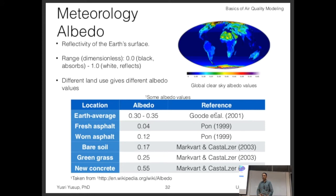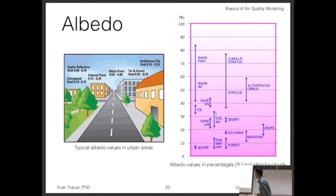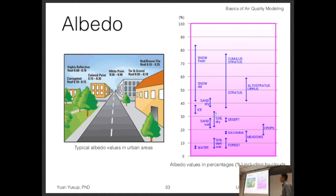Most of the time when you run air quality modeling, you run it in industrial or urban areas, so these values can be useful as a reference if you don't know the surface characteristics. Typical albedo values in urban areas include: highly reflective colored paint at 0.15 to 0.25, corrugated roof, white paint at 0.5 to 0.9, tar and gravel at 0.03 to 0.13, and red-brown tile at 0.1 to 0.35.